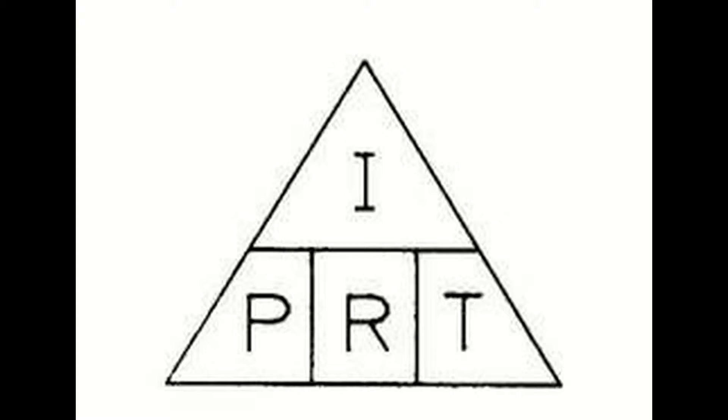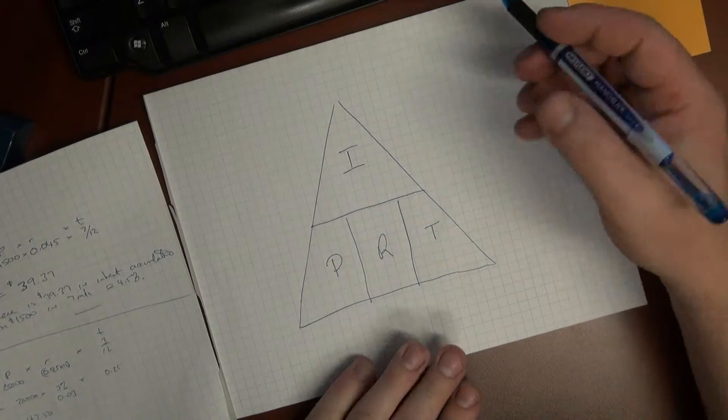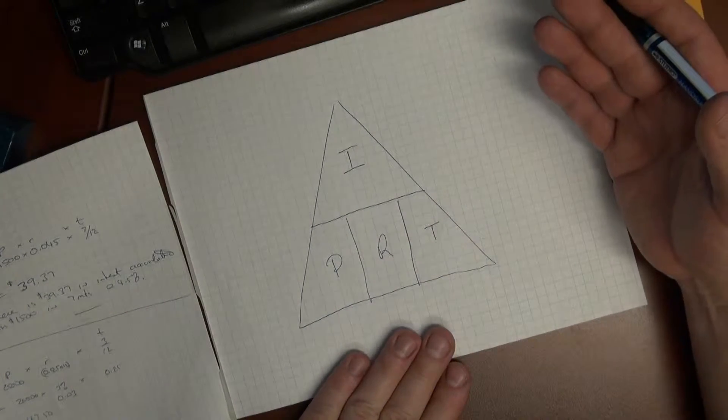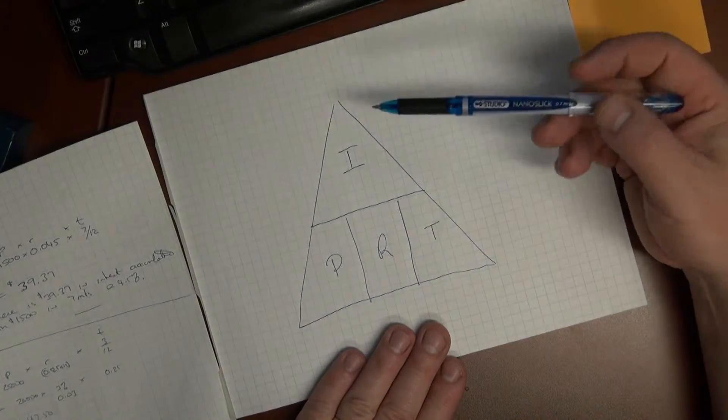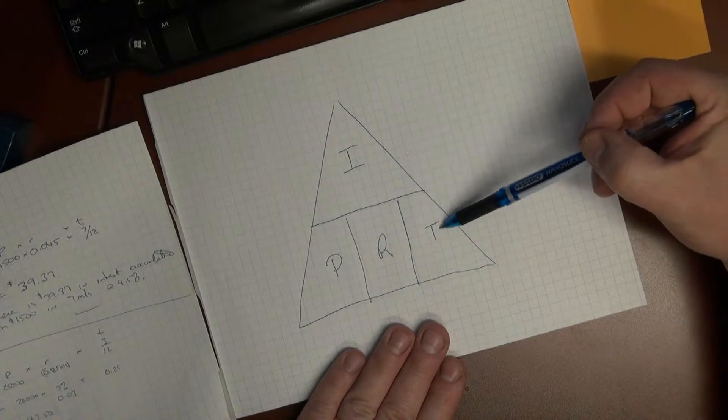And the triangle - this triangle allows us to identify any of the missing factors. For example, we can calculate the interest, we can calculate the principal, we can calculate the rate, we can calculate the time.